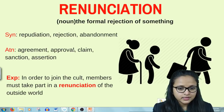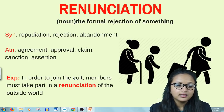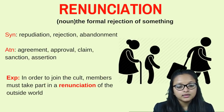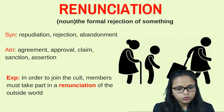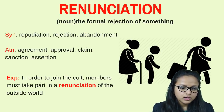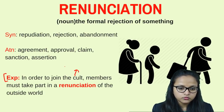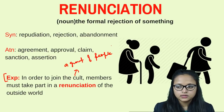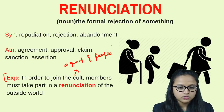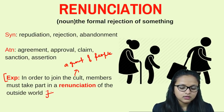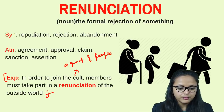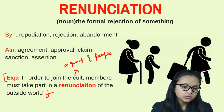Synonyms of renunciation are repudiation, rejection, and abandonment — because you leave and abandon everything. Antonyms are agreement, approval, claim, sanction, or assertion — because you accept it. Example: 'In order to join the cult' — cult refers to a group of people following a religion or a particular saint or preacher — 'members must take part in renunciation of the outside world,' meaning people have to give up the outside world.